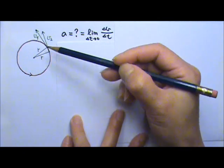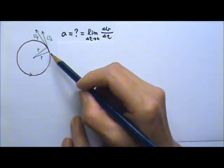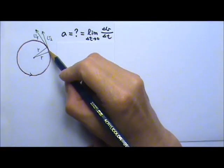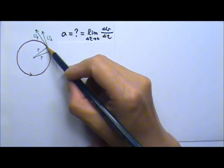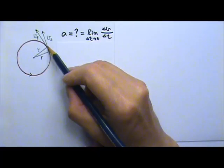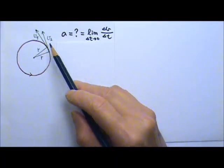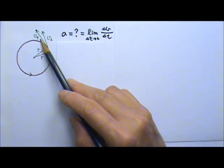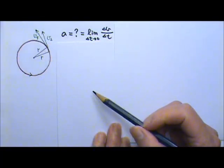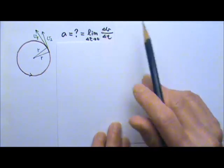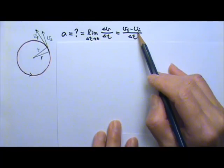When it's at the initial position, its velocity is going tangent to the circle. Because when the object is over here, it's traveling in that direction. The final velocity would again be tangent to the circle that way. Since it's uniform circular motion, the speed doesn't change. The magnitude of these two should be equal, so I'm drawing those two vectors the same length. Now to find the change in velocity, we just have to do the final velocity minus the initial velocity.